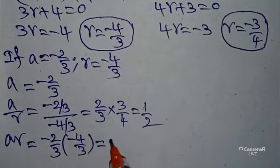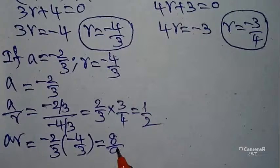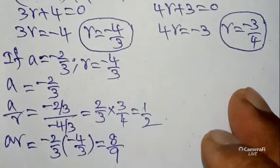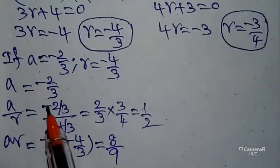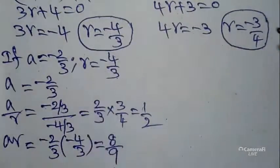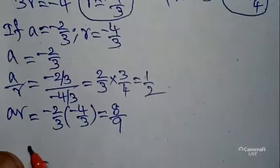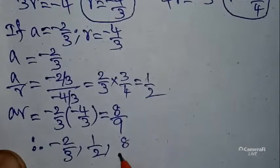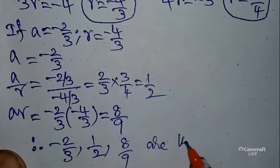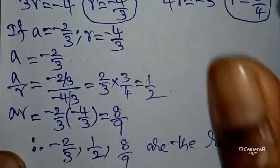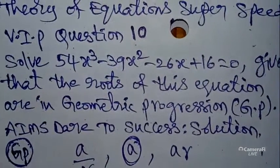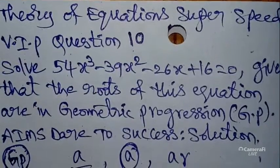Therefore the roots are −2/3, 1/2, and 8/9 — these are the roots of the equation 54x³ − 39x² − 26x + 16 = 0.